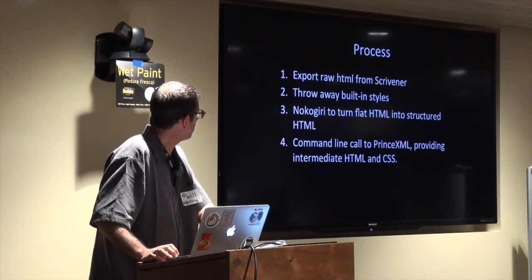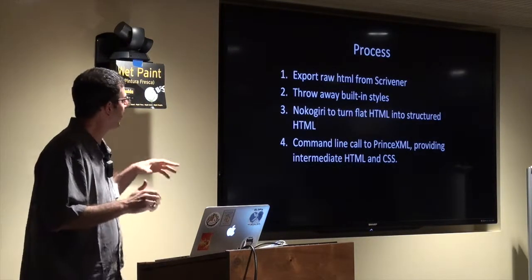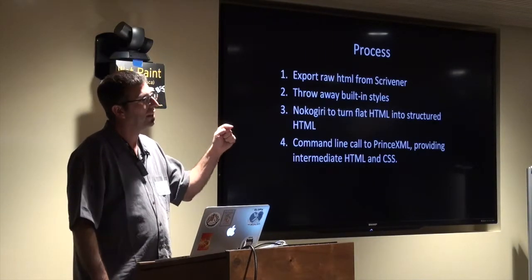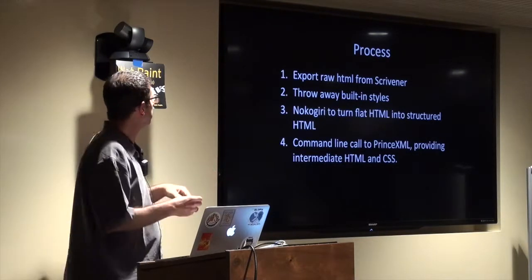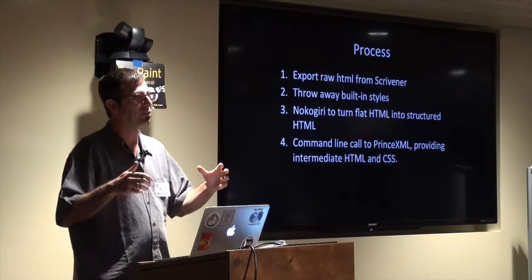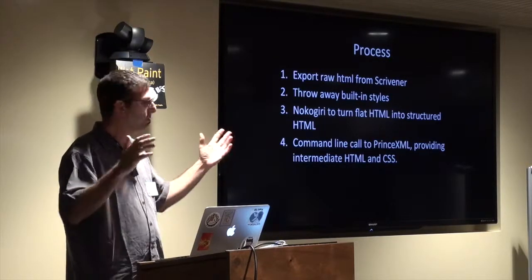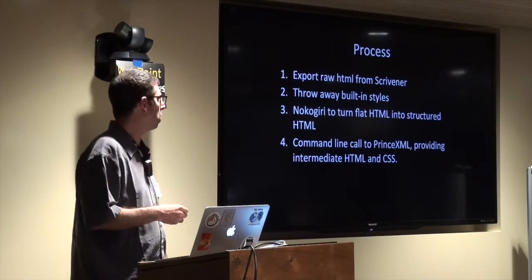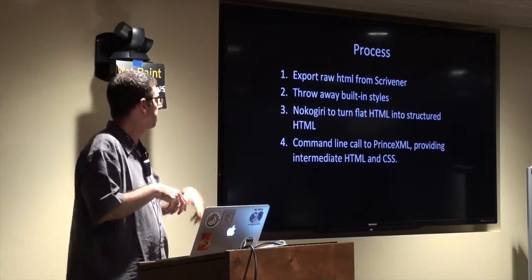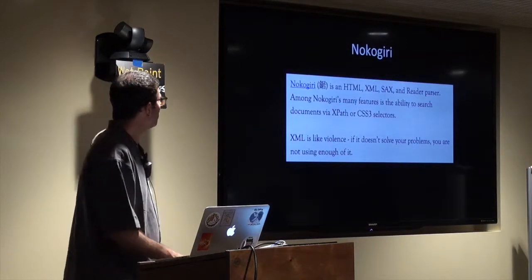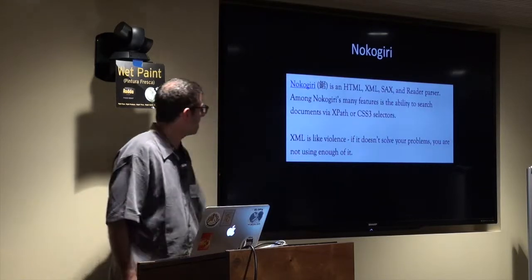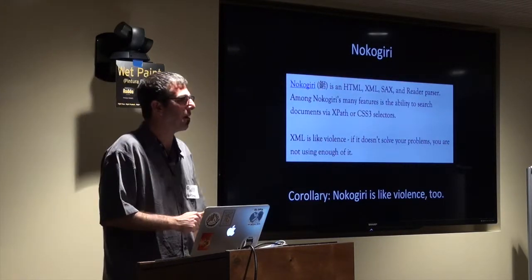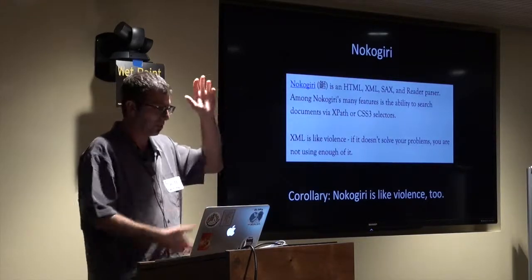So the raw process was this: Scrivener had a way to export raw XML — very flat XML with no structure, only HR tags and P tags. From that I had to create something structured. I also needed to throw away all of the built-in styles — they were generating dozens or hundreds of styles. I used lots and lots of Nokogiri to turn the flat HTML into something structured, and then finally made a command line call to Prince XML to provide the intermediate HTML I generated plus the CSS. XML is like violence — if it doesn't solve your problems, you're not using enough of it. And what I learned is Nokogiri is like violence too.